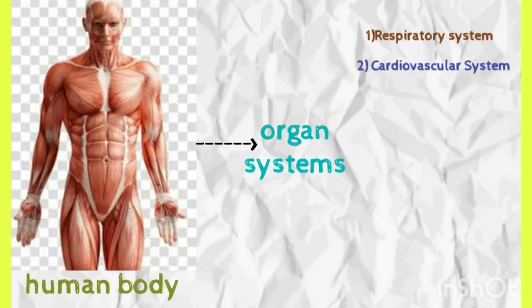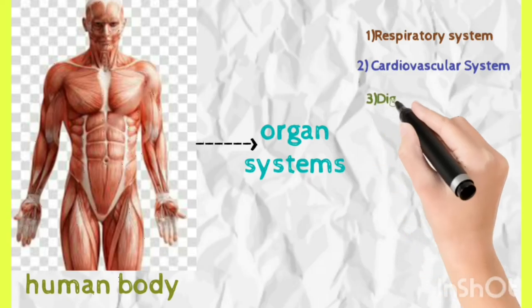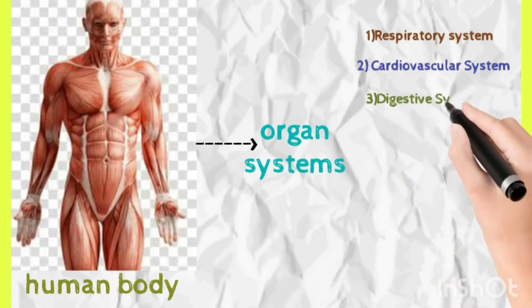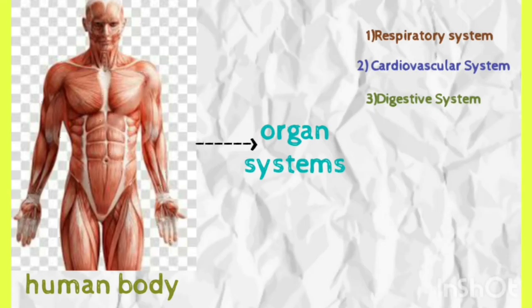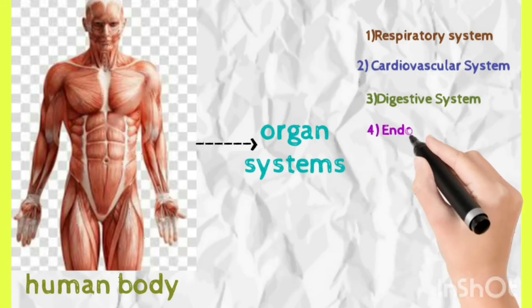After the cardiovascular system, we have the digestive system, which processes our food. This includes our esophagus, stomach, small intestine, large intestine, colon, rectum, anus, etc.